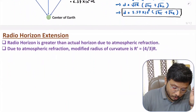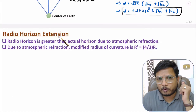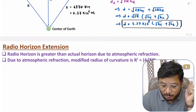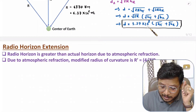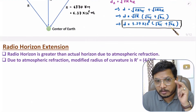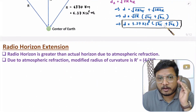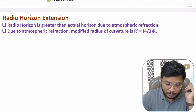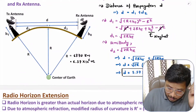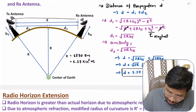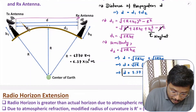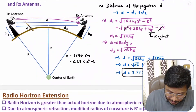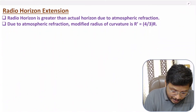Now I'll explain radio horizon extension. For line of sight communication, the range formula gives 3.57 × 10³ times (square root of ht plus square root of hr). However, in practice, radio waves undergo atmospheric refraction, causing a slight bending of the EM wave. Because of this bending, there is a radio horizon extension, where the effective radius of curvature is extended beyond the geometric value.